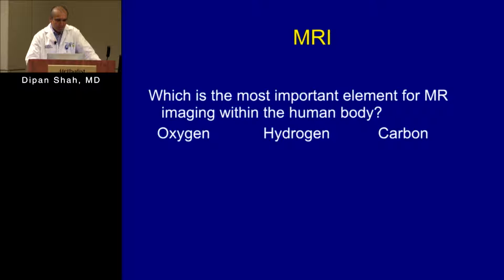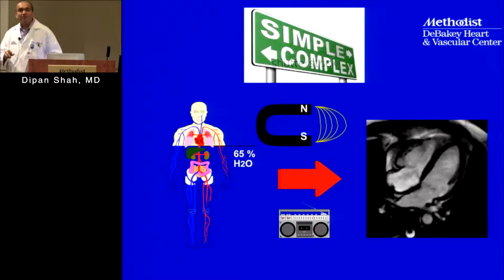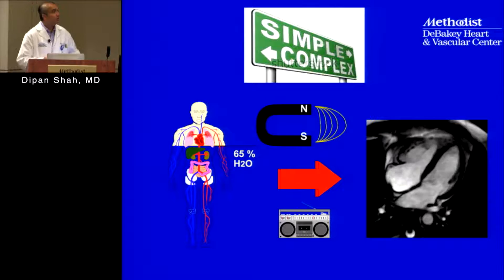The other question: what's the most important element for MRI imaging of the human body — oxygen, hydrogen, or carbon? Most people got it right: hydrogen is what we use today for most MRI imaging. There's a very good reason — two-thirds of the body is composed of water, which contains hydrogen, giving a very strong signal.